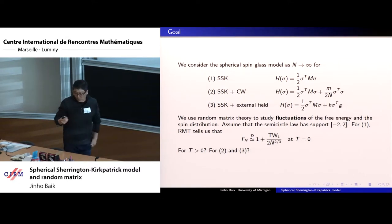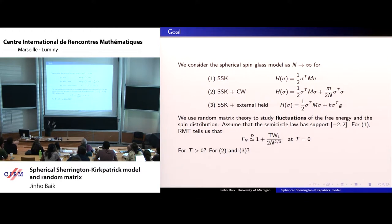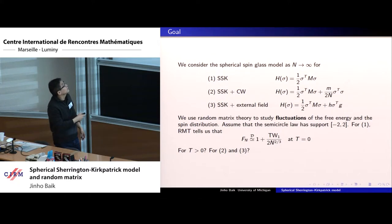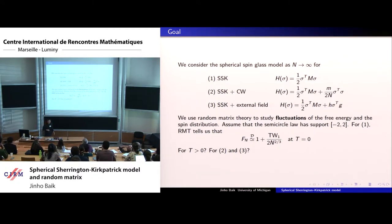In our convention, we assume the semicircle law has support from minus two to two; that is how we pick M, which is a real Wigner matrix. In particular, at beta equals infinity (the zero temperature case), the free energy F_n is exactly the largest eigenvalue. From random matrix theory, F_n scales by one over two so that the largest location is at two, and has fluctuations given by the Tracy-Widom distribution at order one over n to the two-thirds. The question is how this changes as temperature increases.